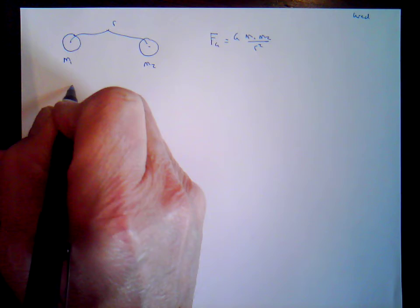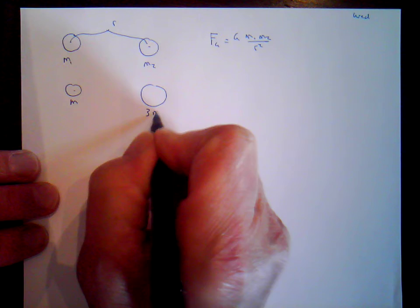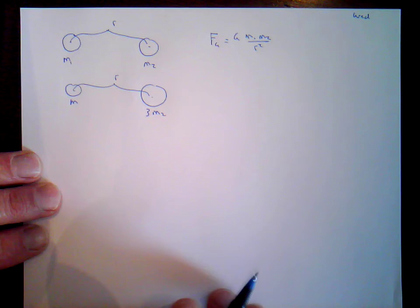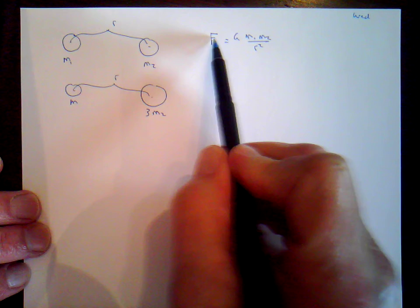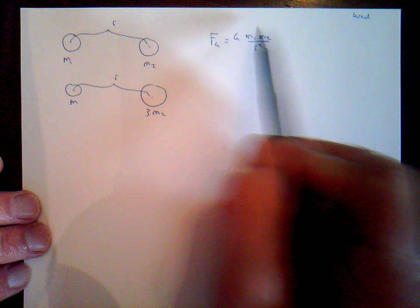Now we're going to change some things. Let's say this mass stays the same, m1, but this mass is going to triple — so this is three times the mass of the original m2. The distance is still the same, still r. How does that change the force? You can look at the equation and notice that the force of gravity is directly related to m2. So if m2 goes larger, the force gets larger; if m2 gets smaller, the force gets smaller.